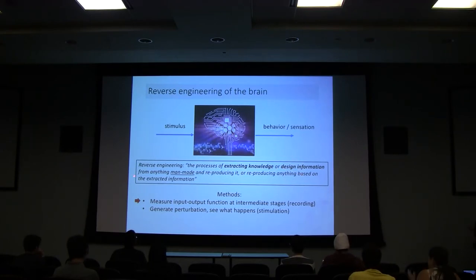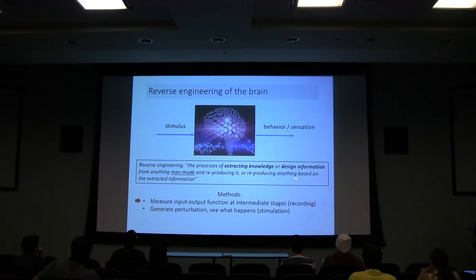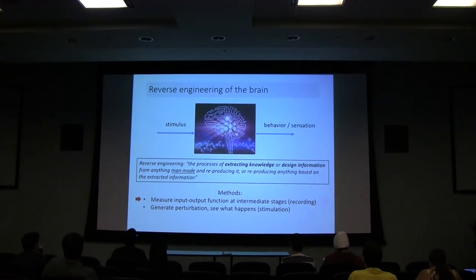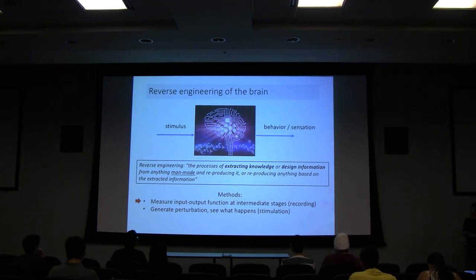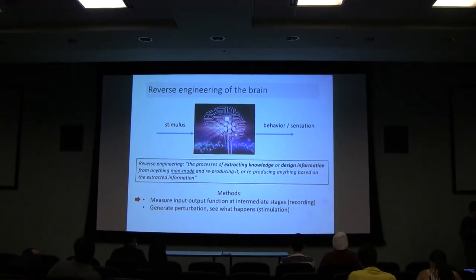Reverse engineering, according to Wikipedia, is the process of extracting knowledge or design information from anything man-made — in this case it's not man-made — and reproducing something based on that information. In a sense, artificial intelligence is trying to extract information from real intelligence and apply it to build something else, or something even more powerful.